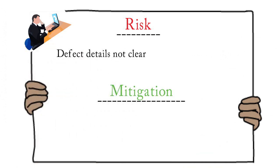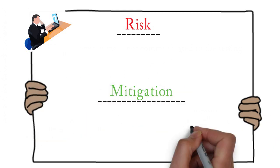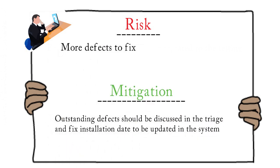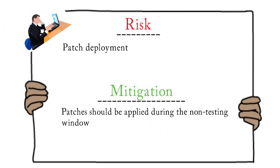If the defect details raised by testers are not clear, lots of time would be wasted. So the testing team should follow the template and provide all necessary details in the defect report. If the number of outstanding defects is very high, the mitigation plan can be that outstanding defects should be discussed in triage, a fixed installation date should be updated in the system, and the development team should work based on that. Patch deployment during testing hours can be a risk, so the mitigation plan is that it should be applied during the non-testing window so that testing is not affected.